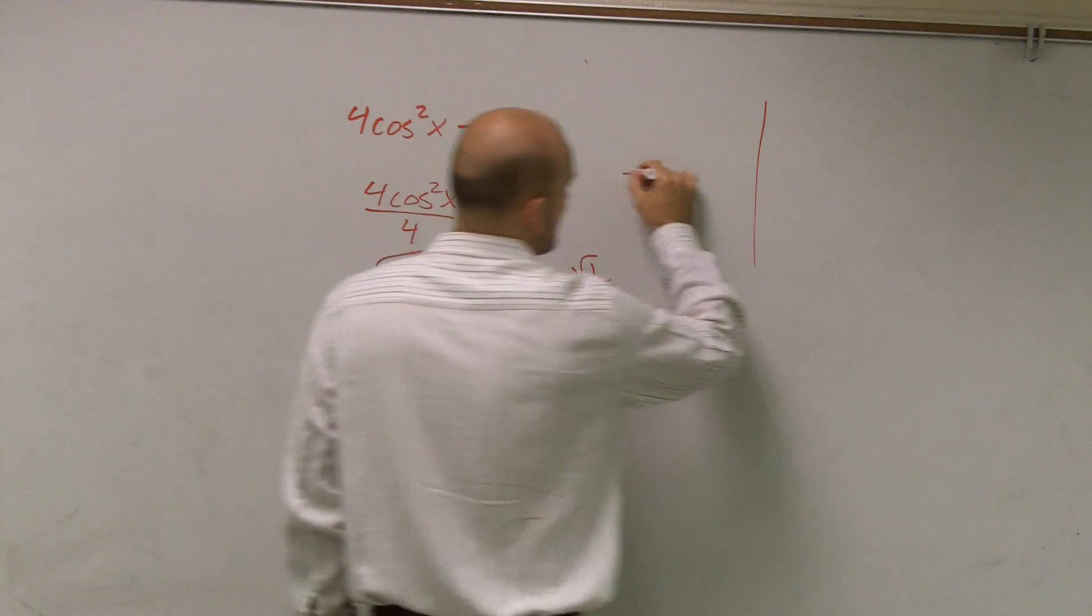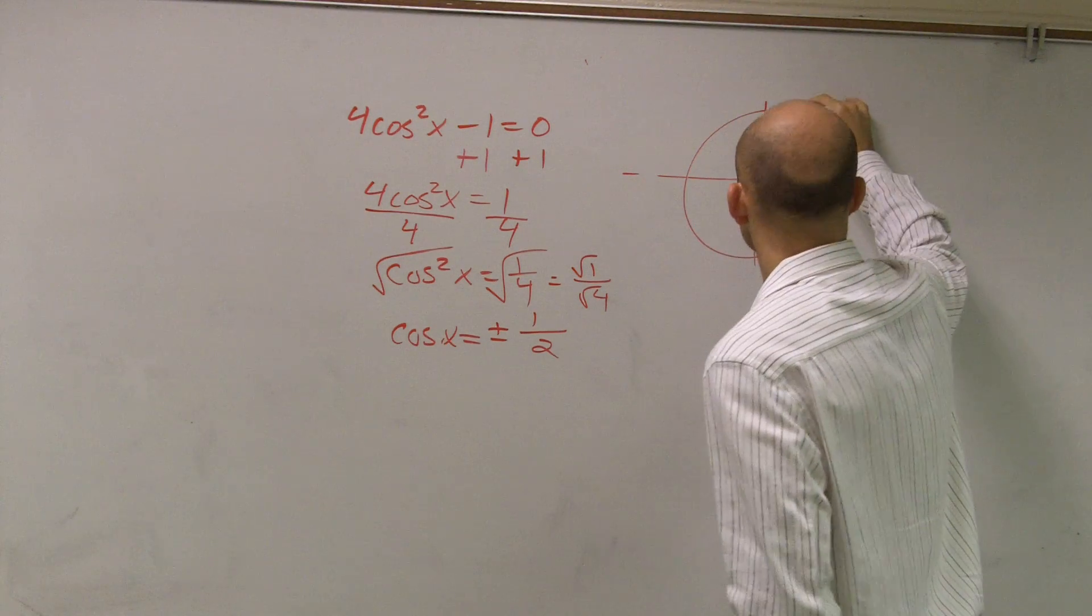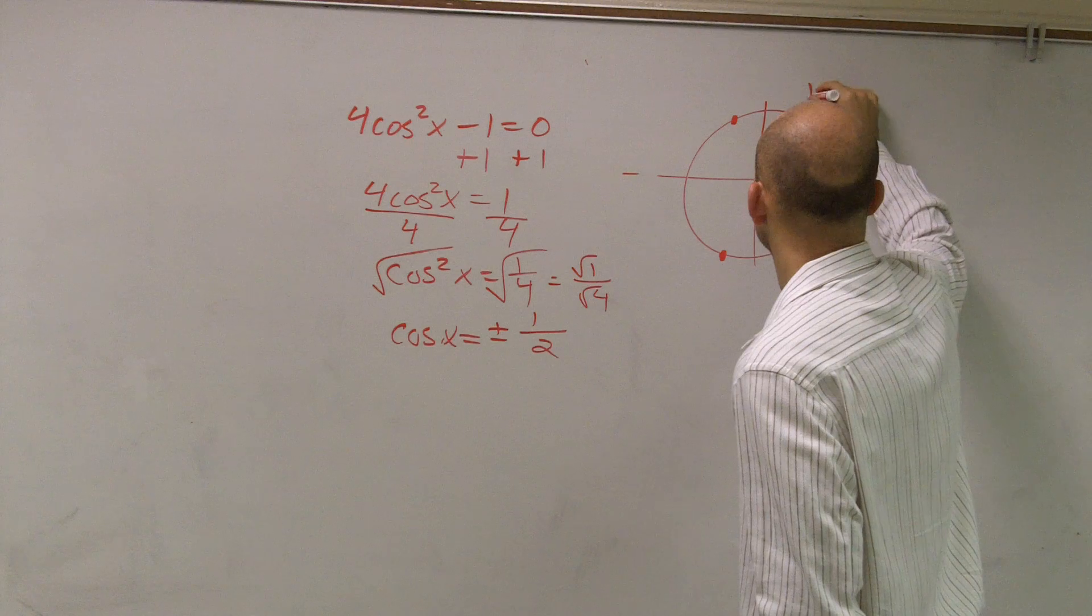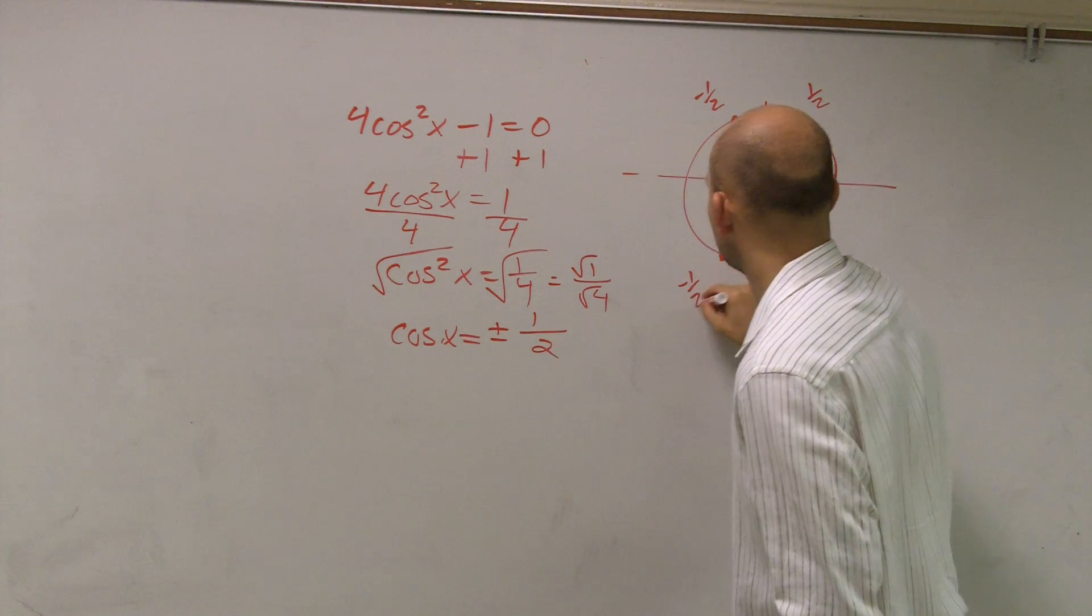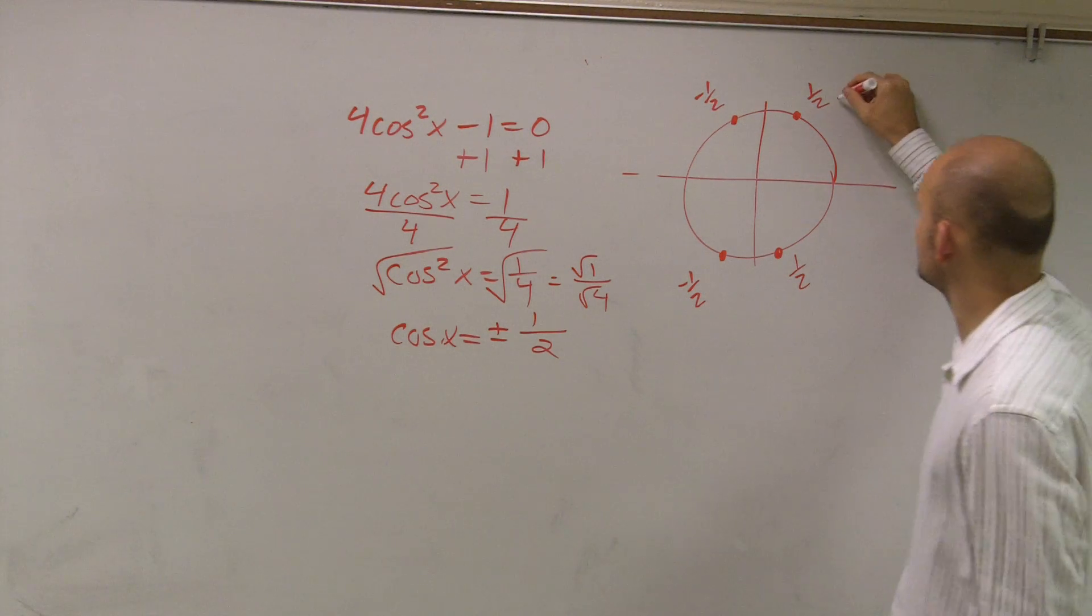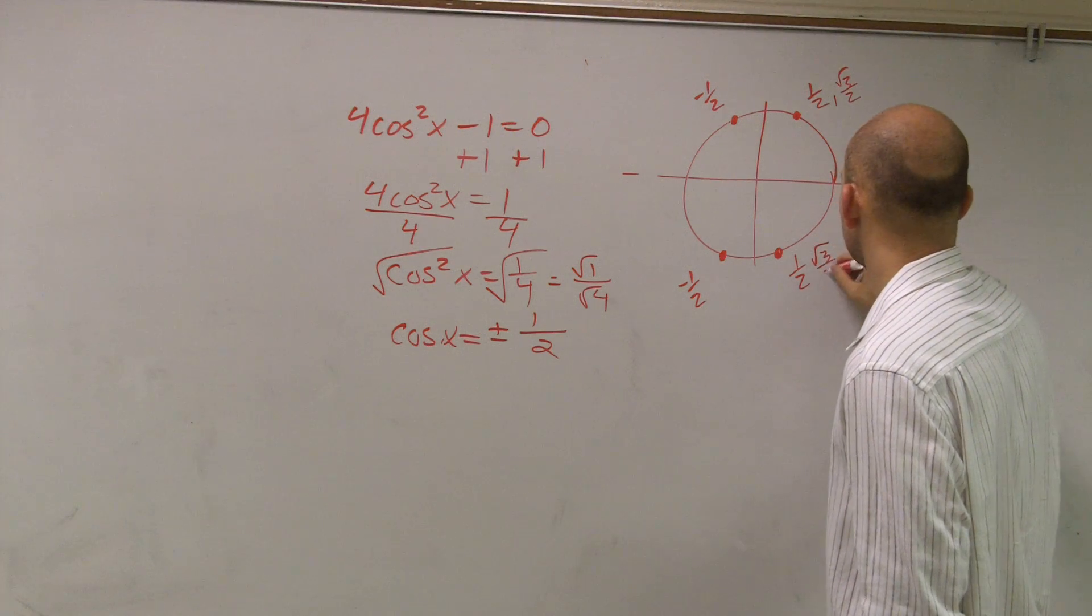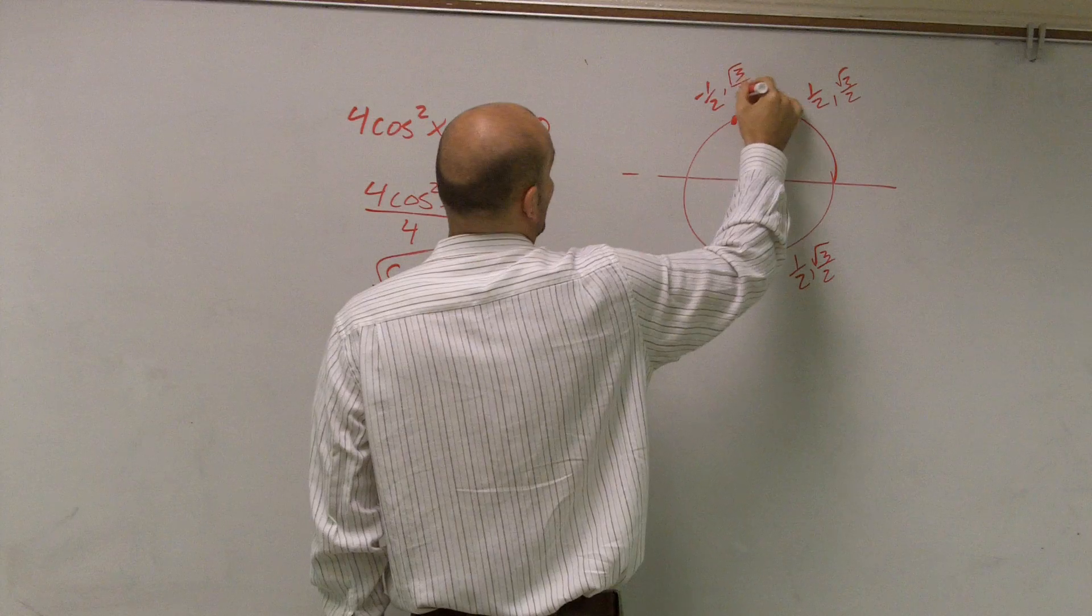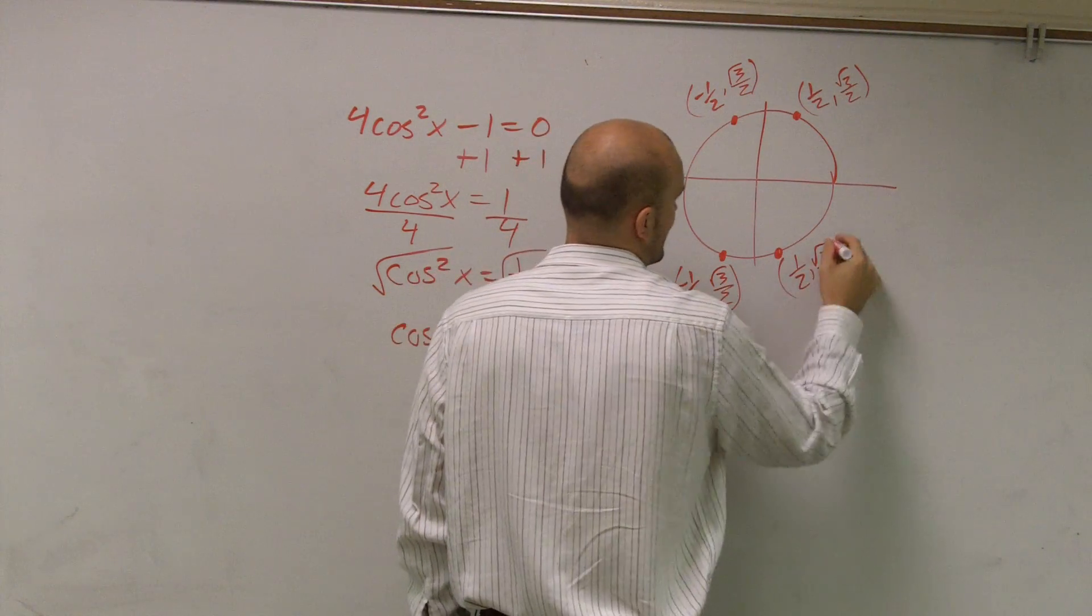When I look at my unit circle now, I have the 1/2 and negative 1/2. So I actually have four coordinates here. Remember, these two coordinates have radical 3 over 2 as the other point. We have four coordinates, four different answers.